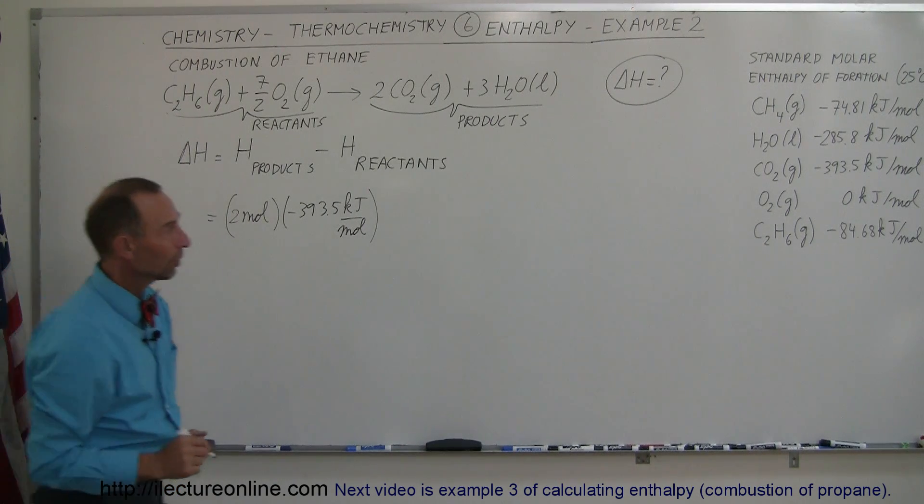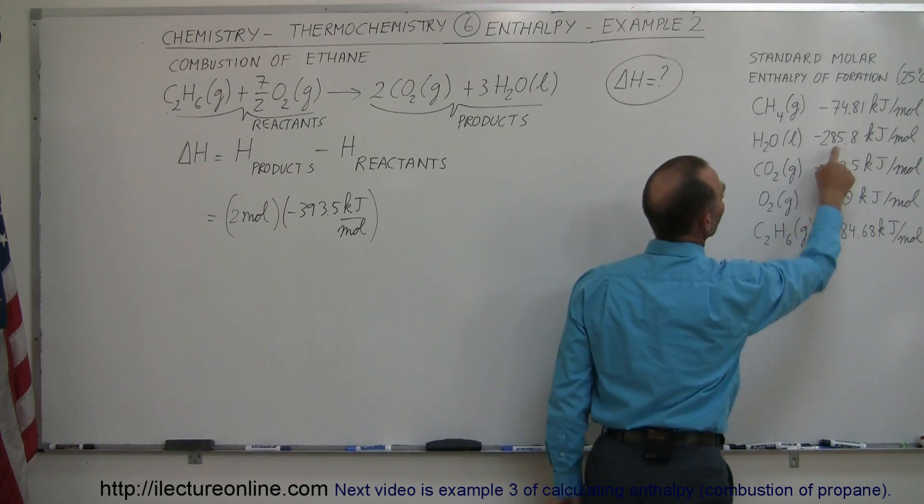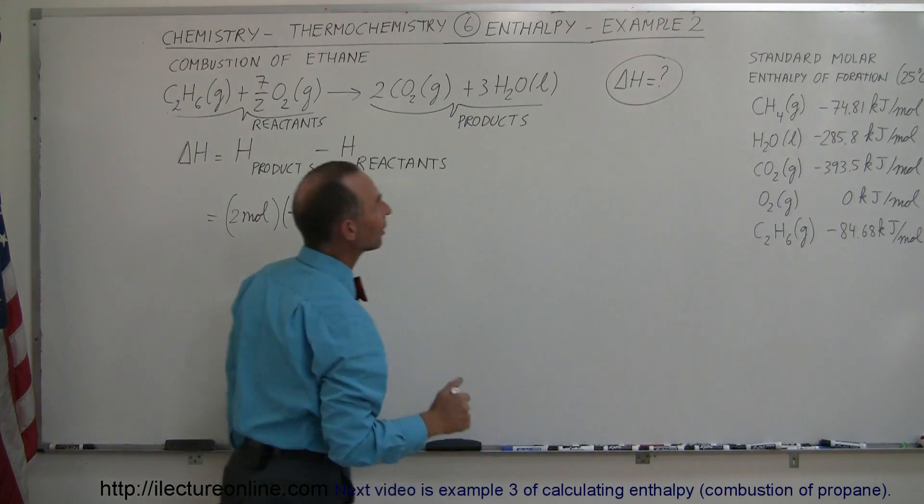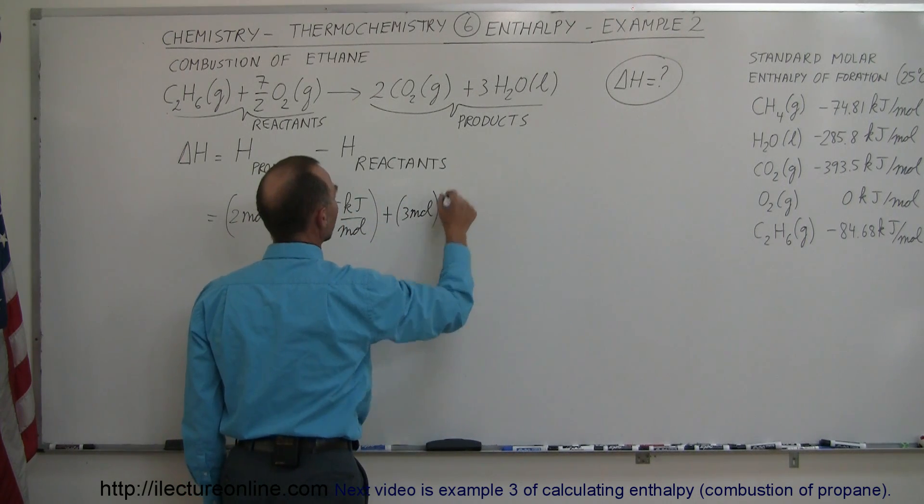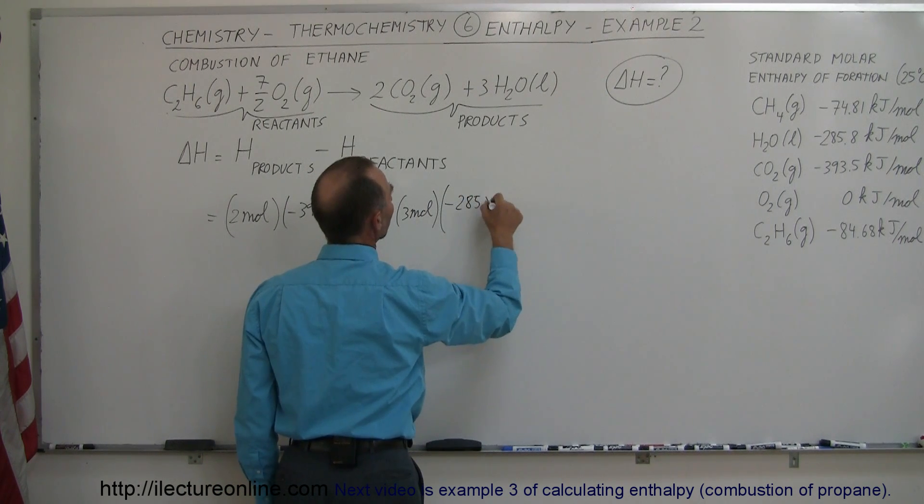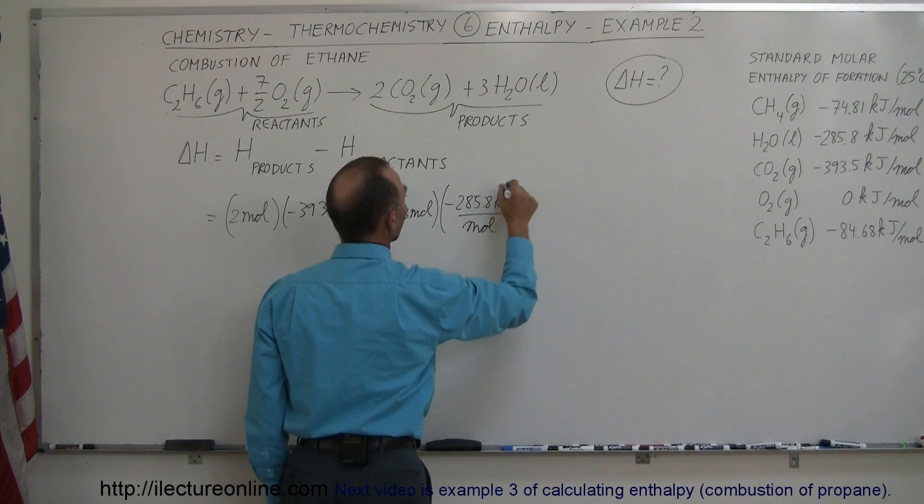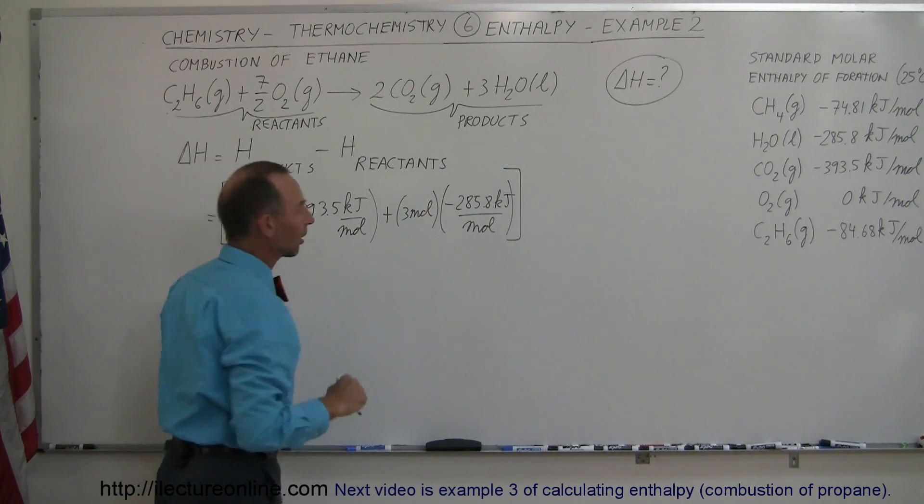Now we have three moles of water, and liquid water has the enthalpy of formation of 285.8 kJ. So plus three moles times minus 285.8 kJ per mole. This here would be the enthalpy of all the products.